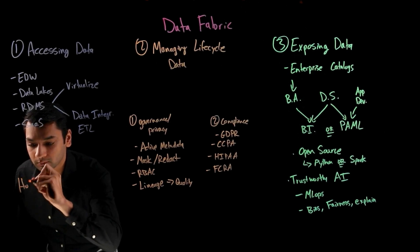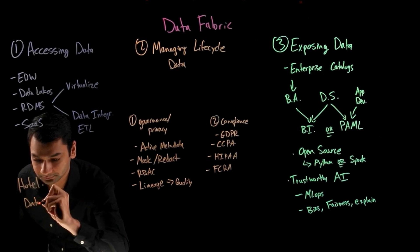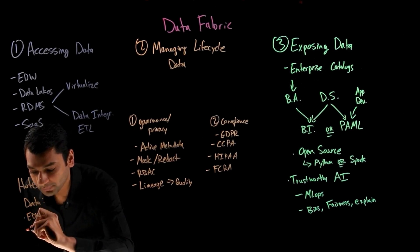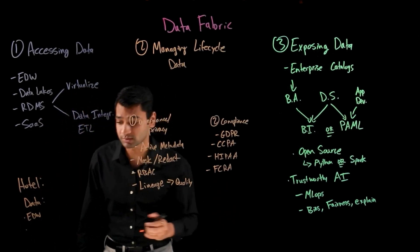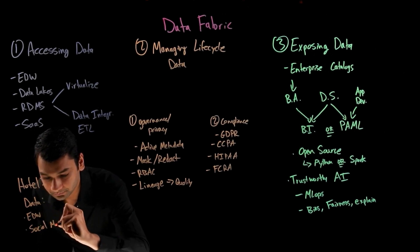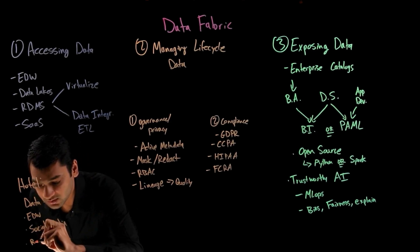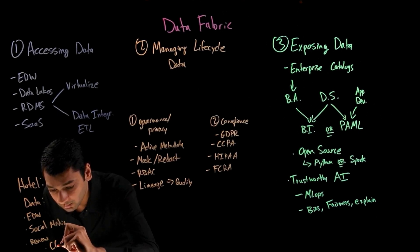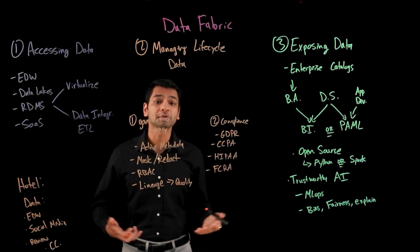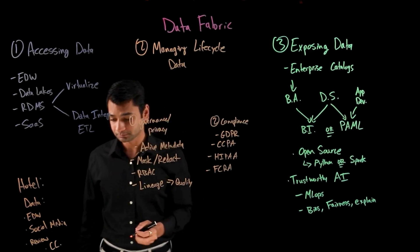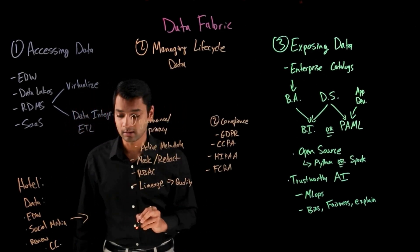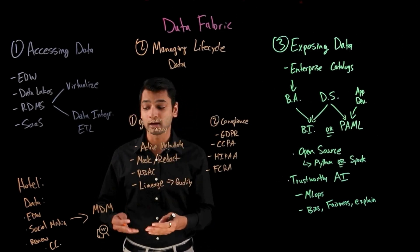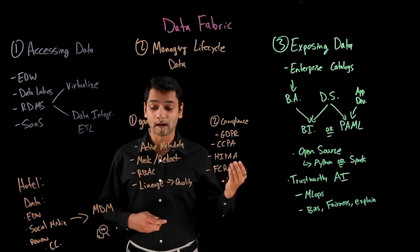Starting with data sources, we might have historical customer data in enterprise data warehouses, but we also want to pull data from unstructured sources like sentiment analysis from social media. We may want to ingest customer review data across multiple locations, and even pull credit card data from a co-branded credit card to understand the customer's purchasing habits and buying history.